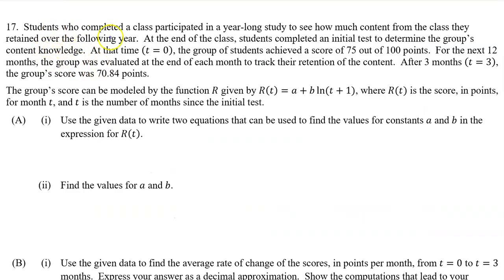Number 17. Students who completed a class participated in a year-long study to see how much content from the class they retained over the following year. At the end of the class, students completed an initial test to determine the group's content knowledge. At that time, t equals 0, the group of students achieved a score of 75 out of 100 points. For the next 12 months, the group was evaluated at the end of each month to track their retention. After 3 months, t equals 3, the group's score was 70.84 points. The group score can be modeled by the function r, given by r(t) = a + b·ln(t+1), where r(t) is the score in points for month t and t is the number of months since the initial test.